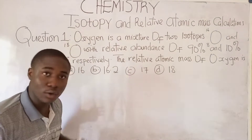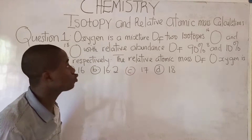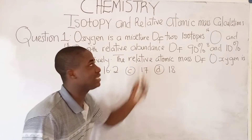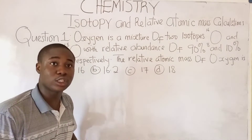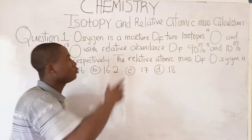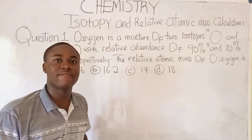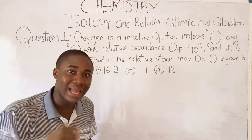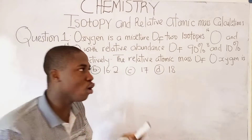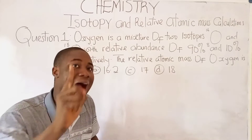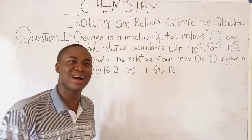In the course of today's lesson, I'll be explaining the term isotopy, and after that, we'll move over to the relative atomic mass calculations. Now, you can see a question written on the board. So before we come to this question, what is isotopy? Isotopy is a phenomenon whereby atoms of the same element have the same atomic number but different mass number.